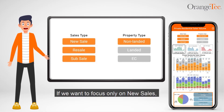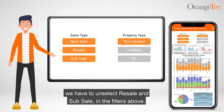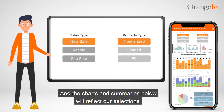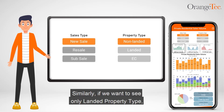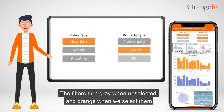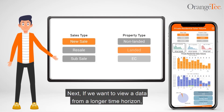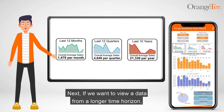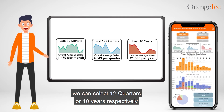If we want to focus only on new sales, we have to unselect resale and sub sale in the filters above, and the charts and summaries below will reflect our selections. Similarly, if we want to see only landed property type, we have to select landed, then unselect non-landed. The filters turn gray when unselected, and orange when we select them. Next, if we want to view data from a longer time horizon, we can select 12 quarters or 10 years respectively.